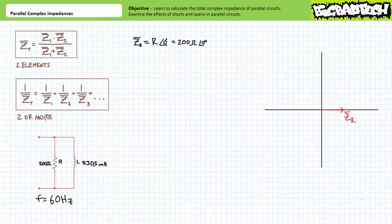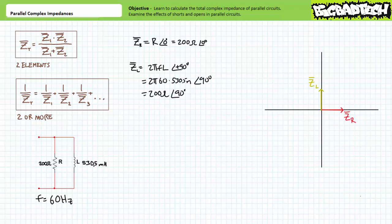Illustrated on the impedance diagram, the resistor has a magnitude of 200 ohms and is pointed entirely in the real horizontal positive x direction. The inductor necessitates a slightly more involved calculation. The impedance of an inductor is 2πfL at an angle of positive 90 degrees. Substituting our given values into the equation, we arrive at an inductive impedance of 200 ohms at an angle of positive 90 degrees. Illustrated on the impedance diagram, the inductor has a magnitude of 200 ohms and is pointed entirely in the imaginary vertical positive y direction.